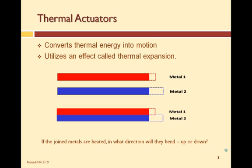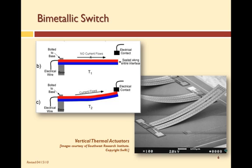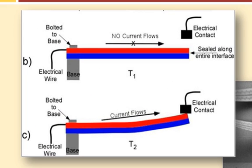Thermal expansion is the manifestation of a change in thermal energy in a material. A bimetallic switch takes advantage of the thermal expansion effect to generate motion. Two dissimilar strips of metal are joined together along their entire lengths. When heat is applied, the bimetallic strip bends in the direction of the metal with a smaller coefficient of thermal expansion. Bimetal strips have many uses; one common use is in thermostats, used to control the temperature in homes and offices. The diagram shows how a bimetallic strip is used in a thermostat.